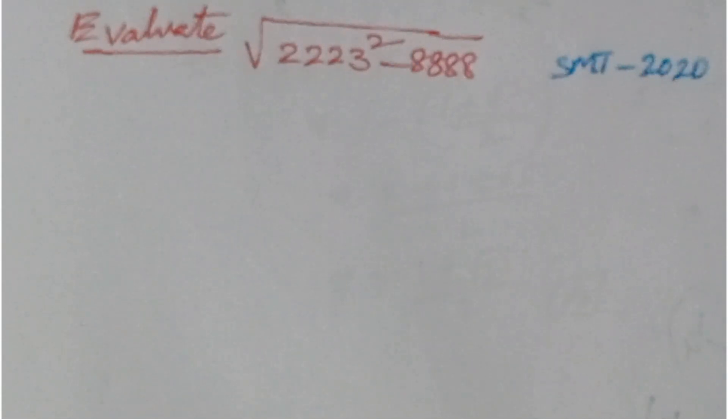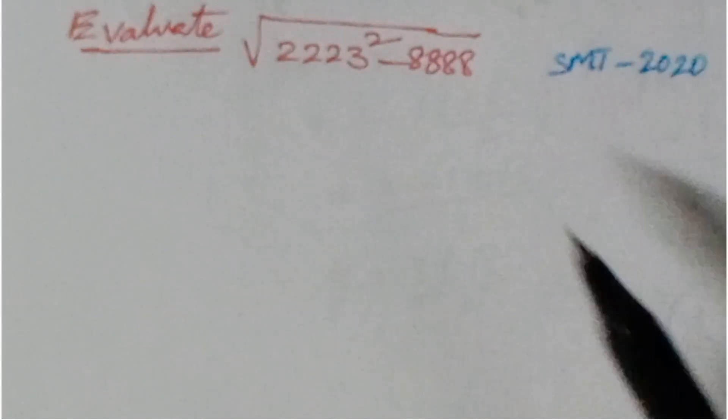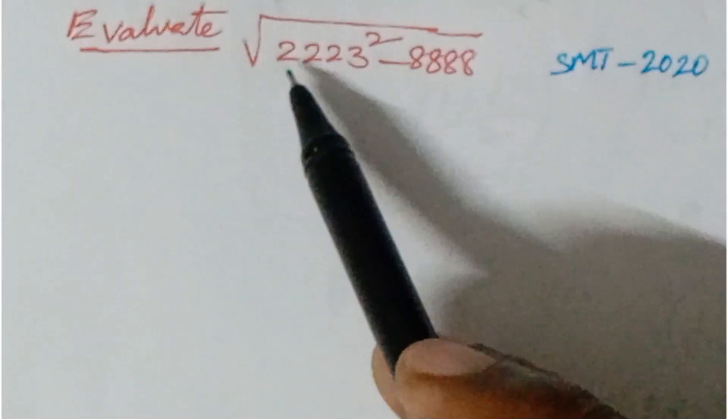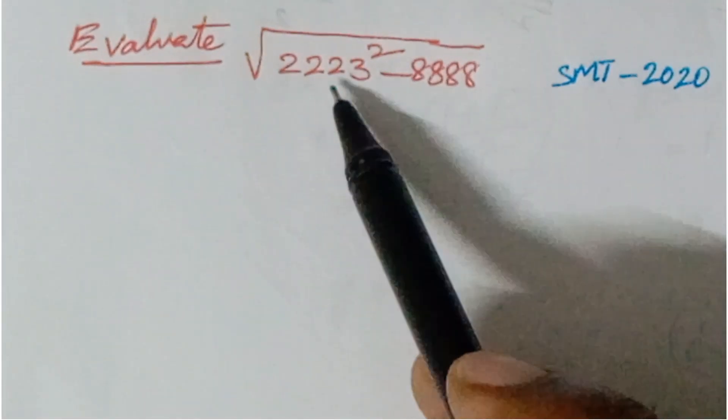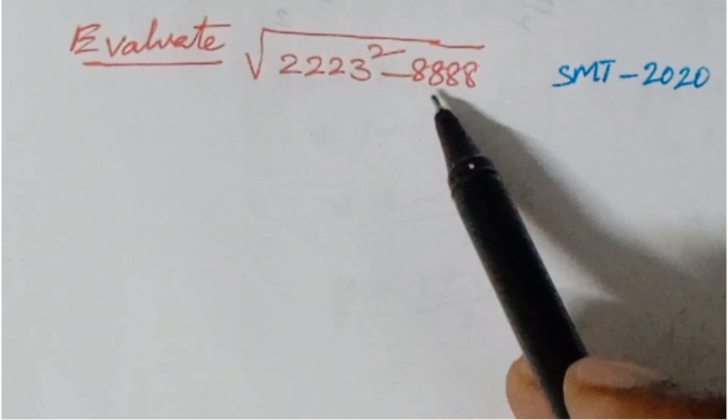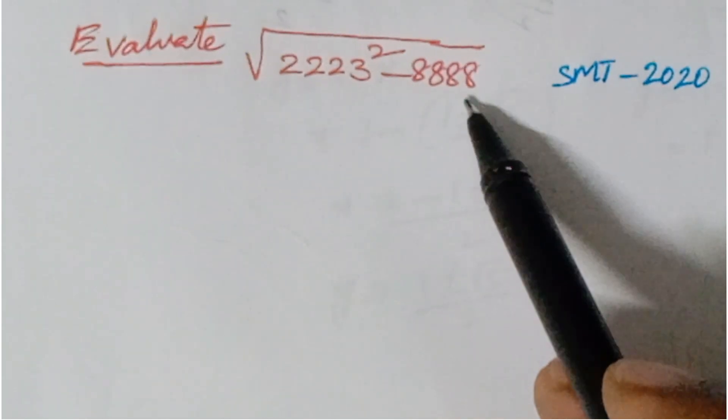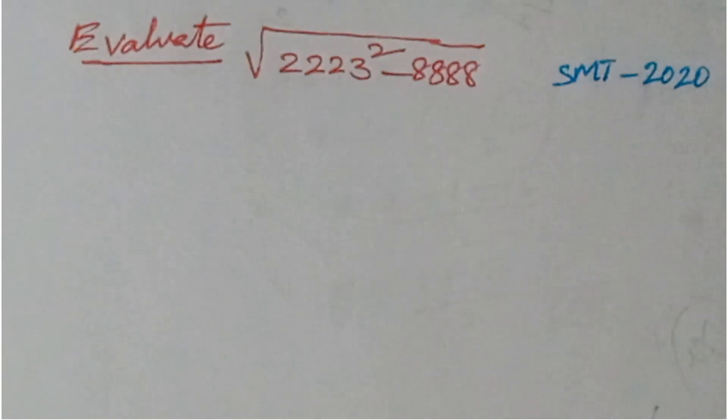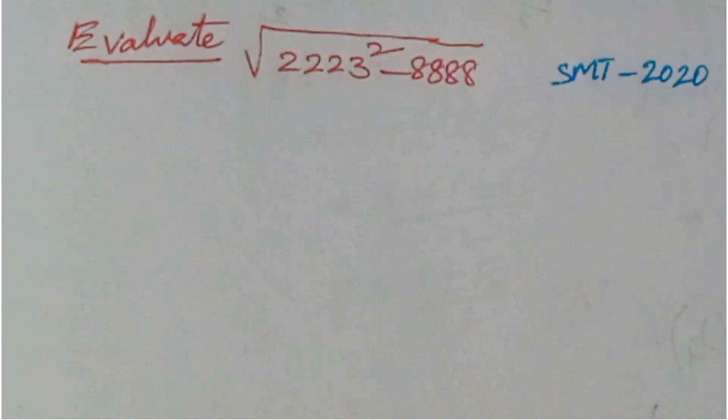Hello, welcome back to Ion CG Max. Today we are having one question from SMT 2020. So here the question is given: evaluate square root of 2223 squared minus 8888. And so here calculator is not allowed, how to solve this, that is the problem here.